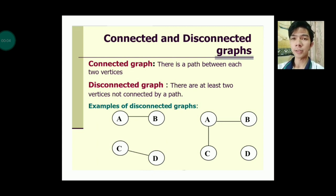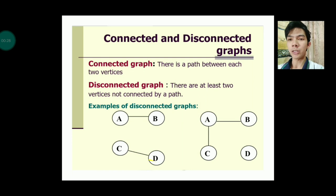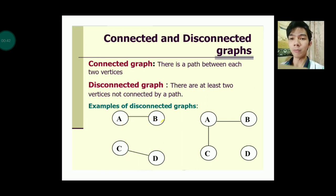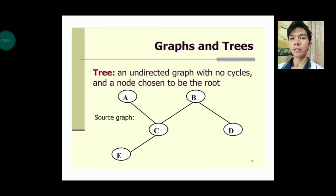A connected graph has a path between each pair of vertices, while a disconnected graph has at least two vertices not connected by a path. Examples of disconnected graphs include: vertices a-b and c-d where there's no line between a and c or between b and d; and another example where a-b and a-c exist but there's no line between d and any of c, a, or b.